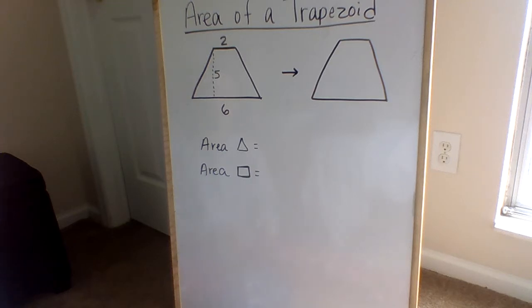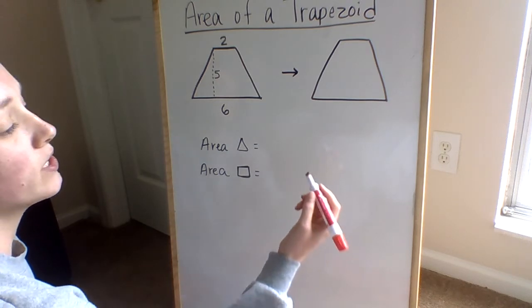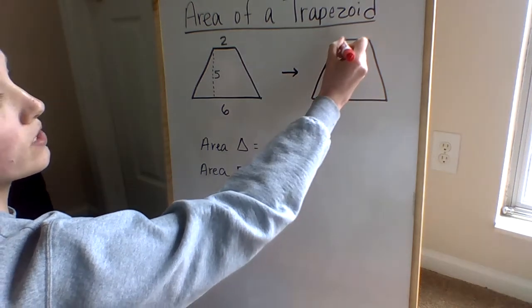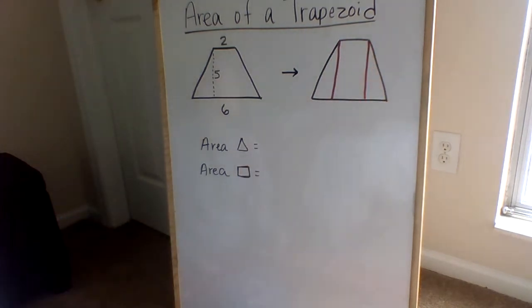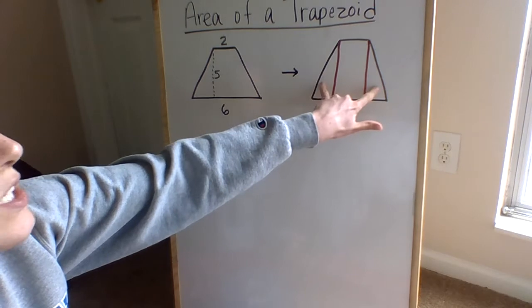All right, so you guessed it. We have our triangle and our rectangle. So how we're going to do this is we're going to take this and we're going to just drop it down like this. So now we have one rectangle and two triangles.